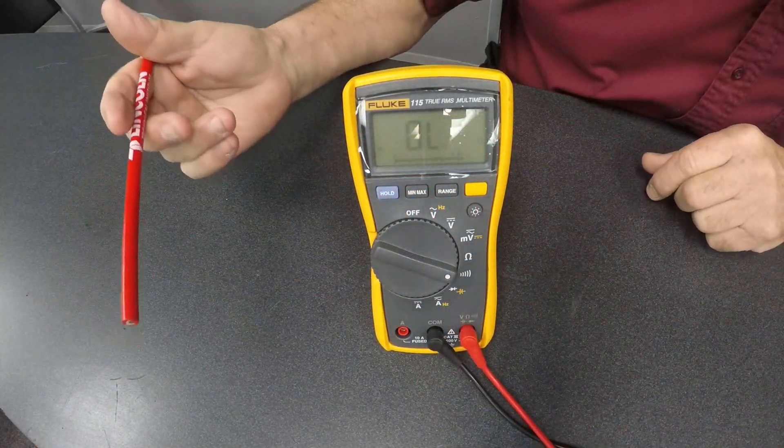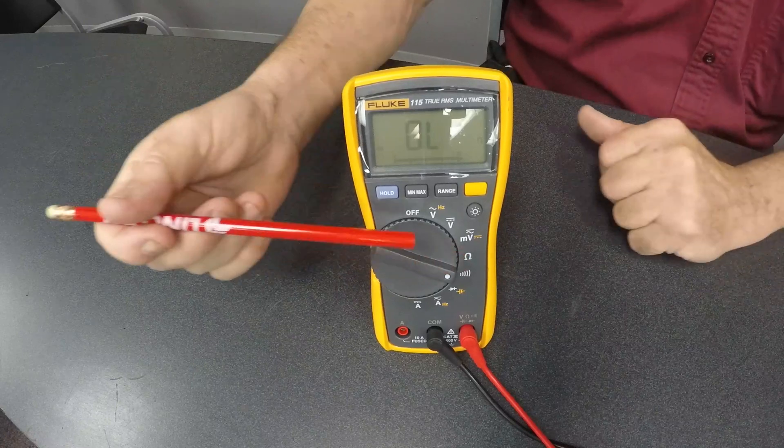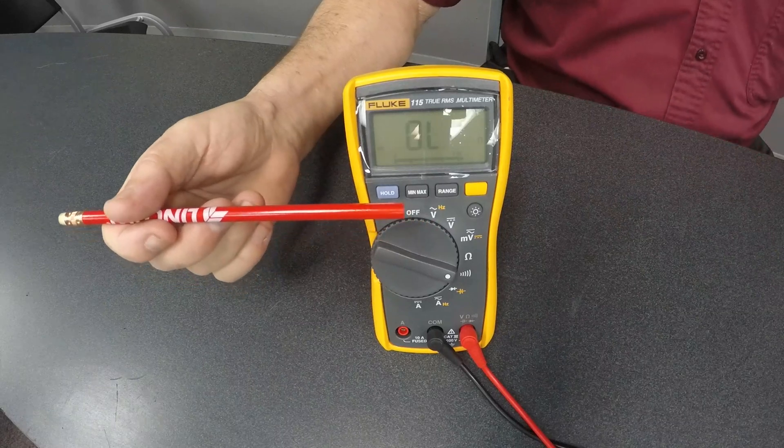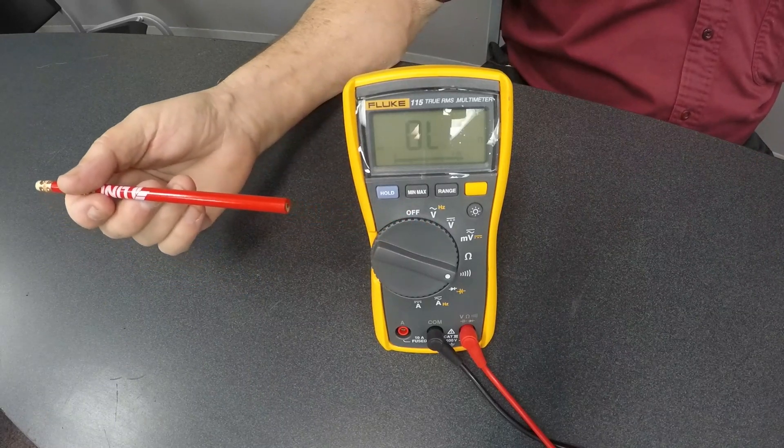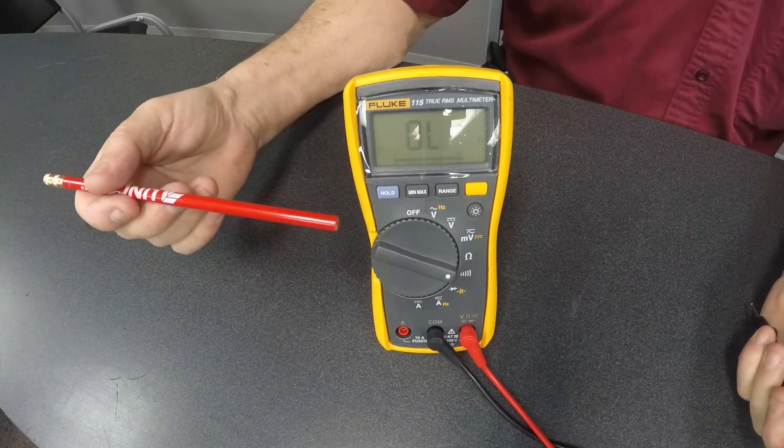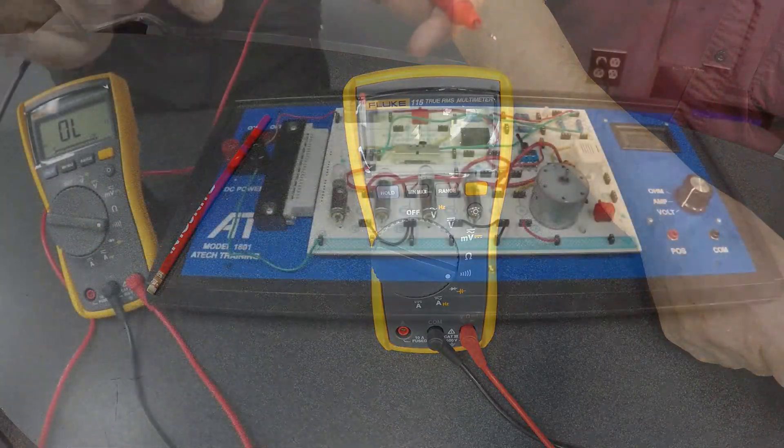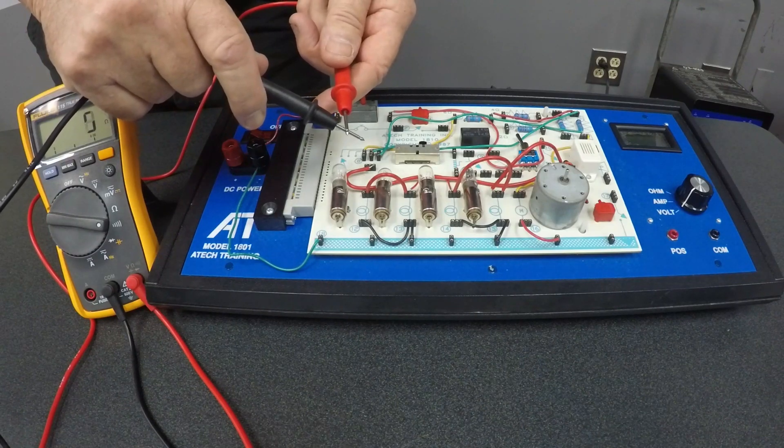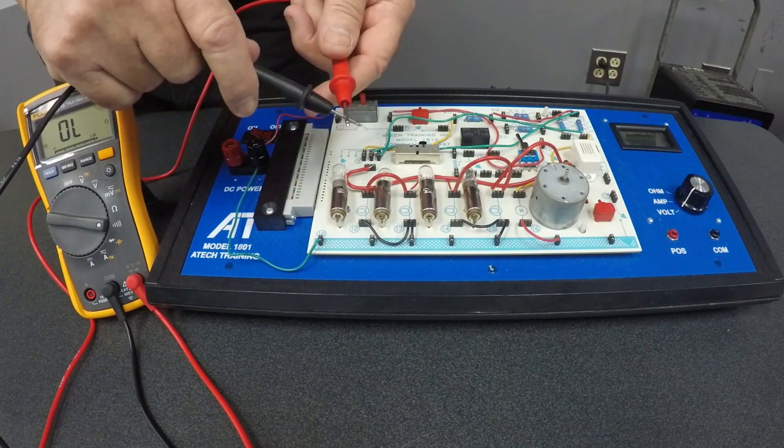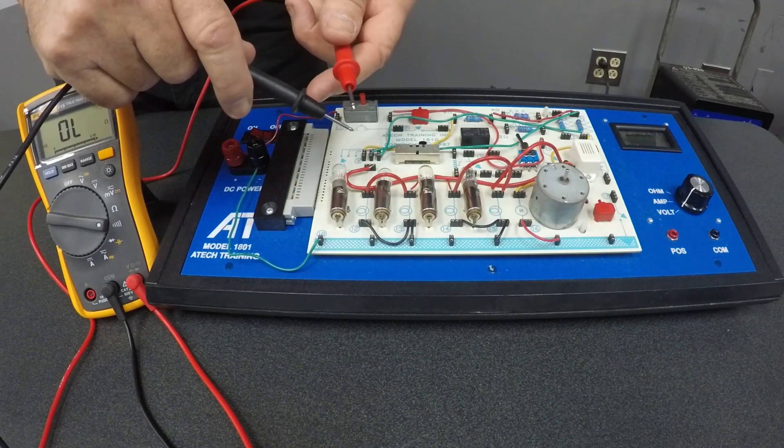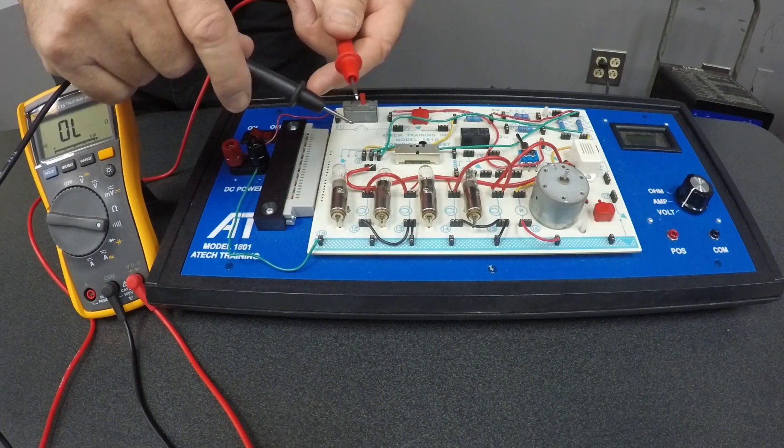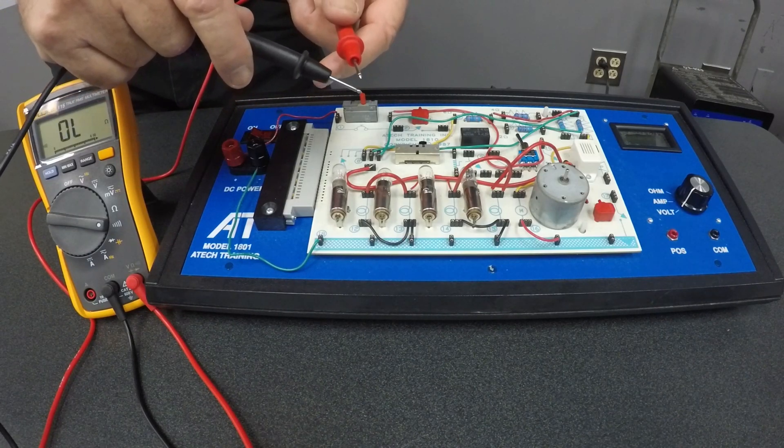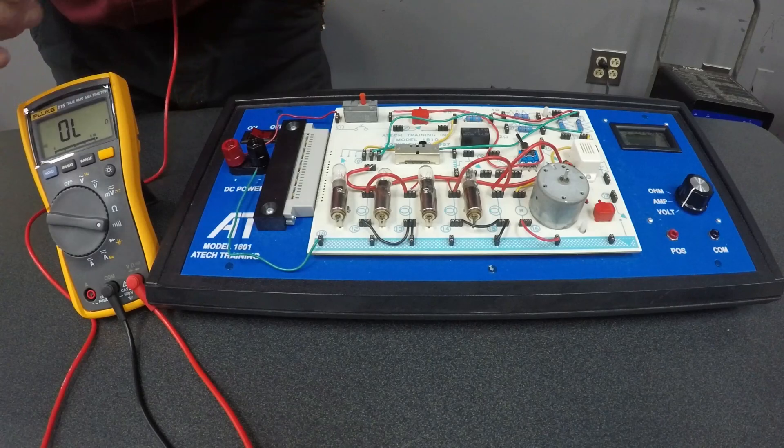The next setting is continuity. Continuity is strictly for that, for checking continuity. It has no function at all. It's not an accurate ohm meter. It's strictly for continuity. So if we take these two leads and we touch them together, it makes an audible sound. That's basically all that's for. Like up under the dashboard working on a car, we need to find out if two wires are good, and they're actually passing through. We would just touch these two leads, and it gives you an audible sound.